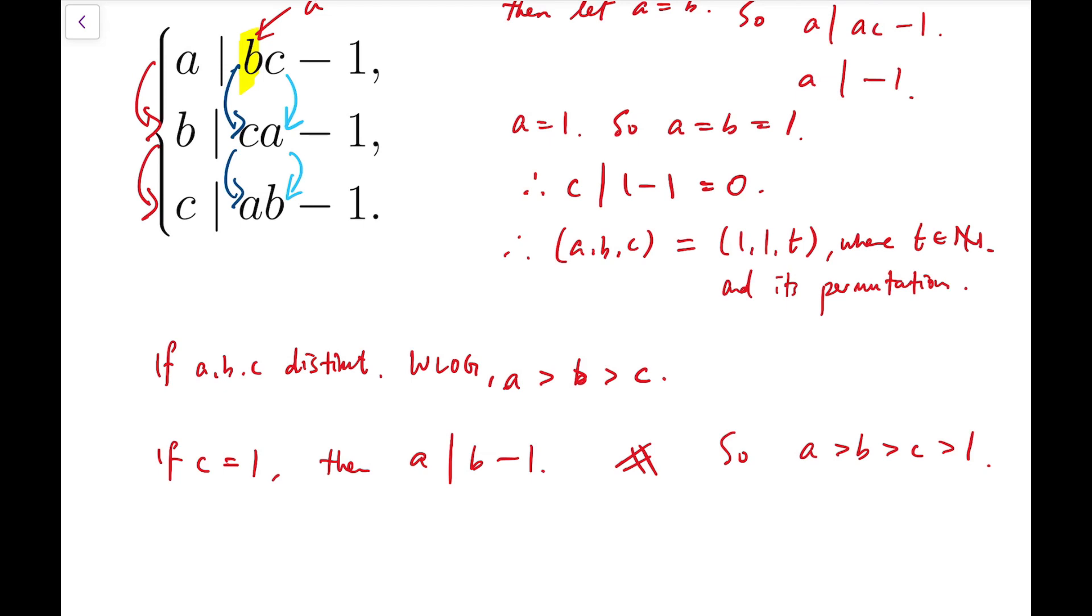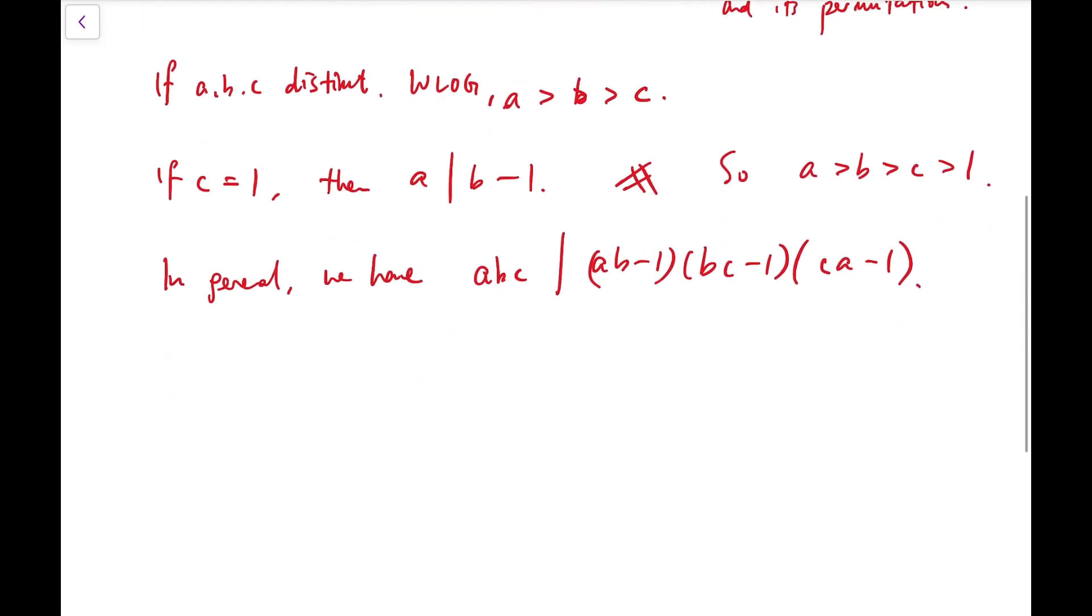So, to make use of the symmetry, I multiply all the relations, and in general, we have ABC, the divisor, to divide AB minus 1, multiplied by BC minus 1, multiplied by CA minus 1. All these things multiplied together, then ABC will divide A²B²C² minus A²BC minus B²AC minus C²AB plus AB plus BC plus CA, and the constant term multiplied to give minus 1.